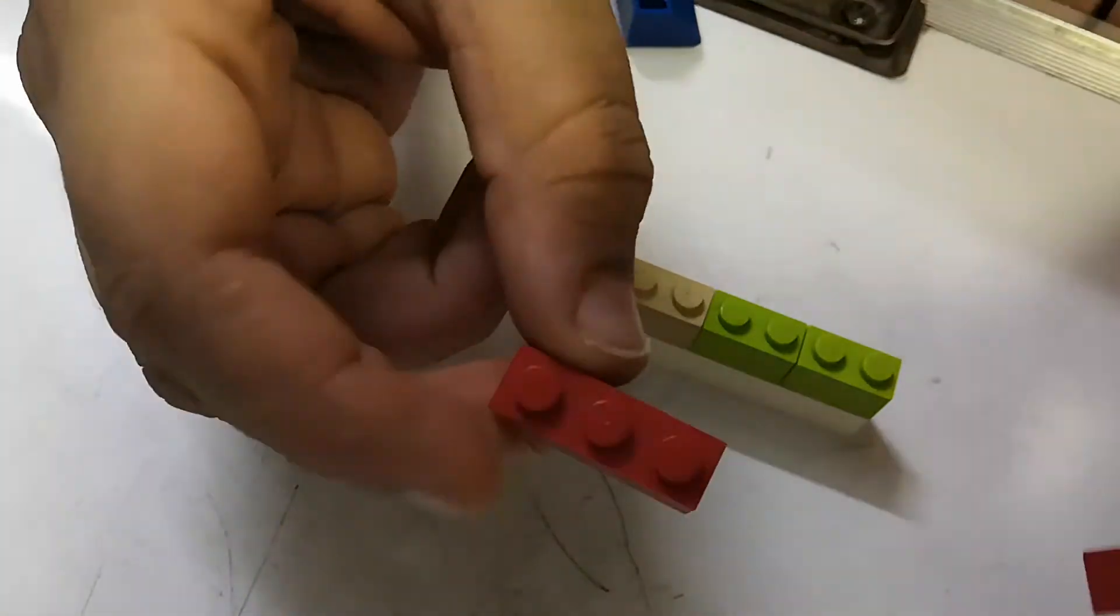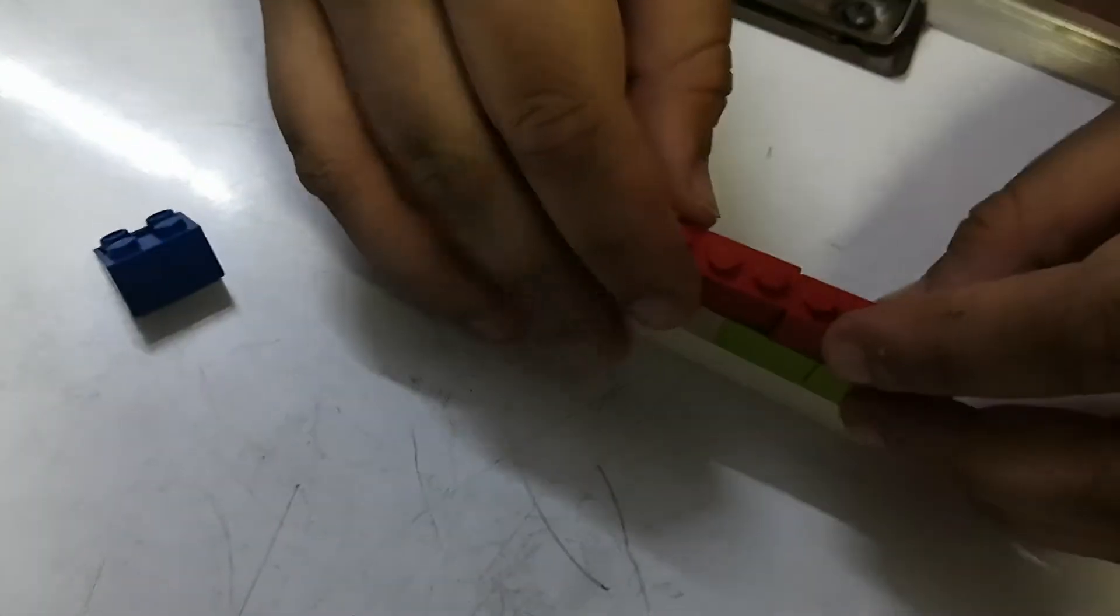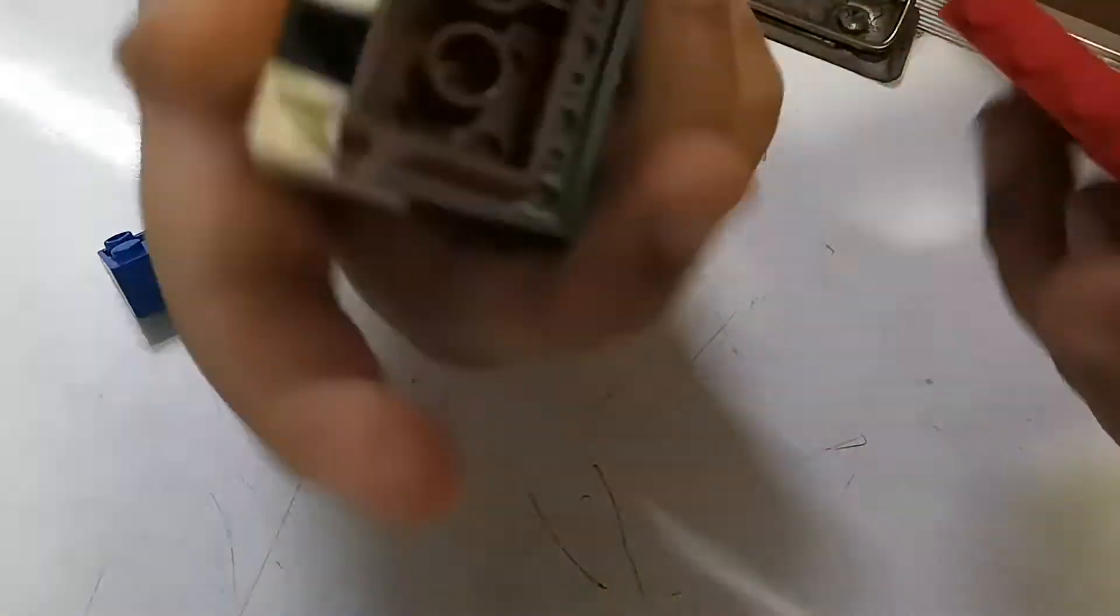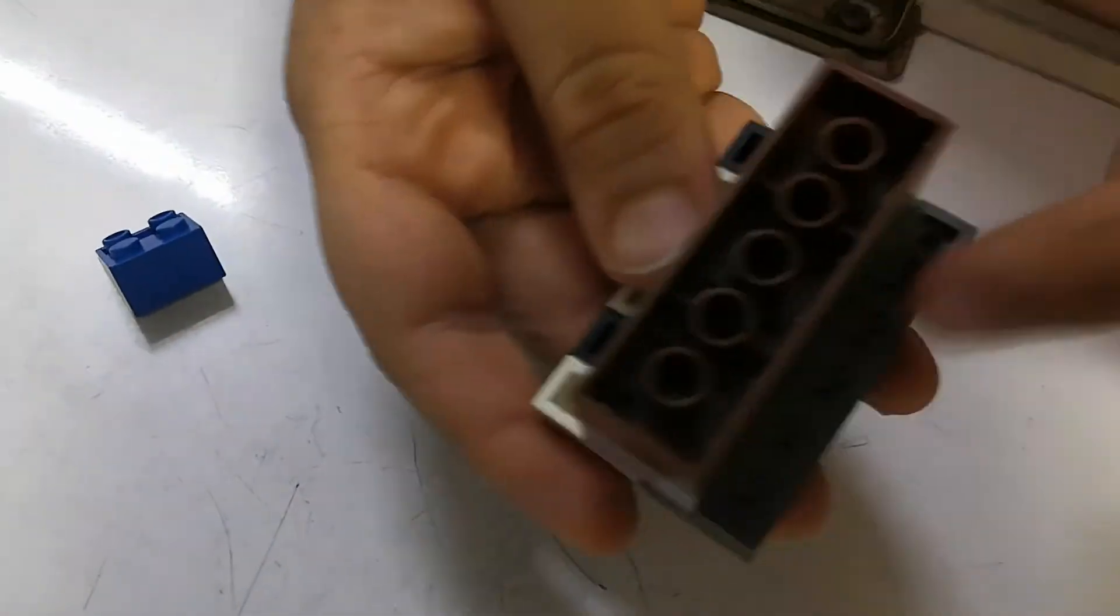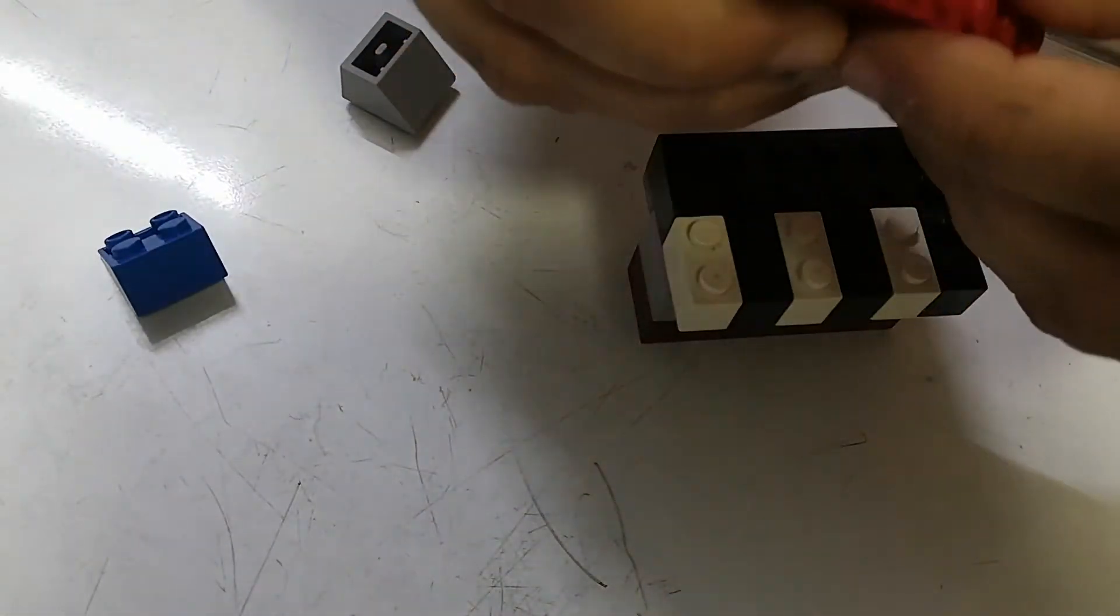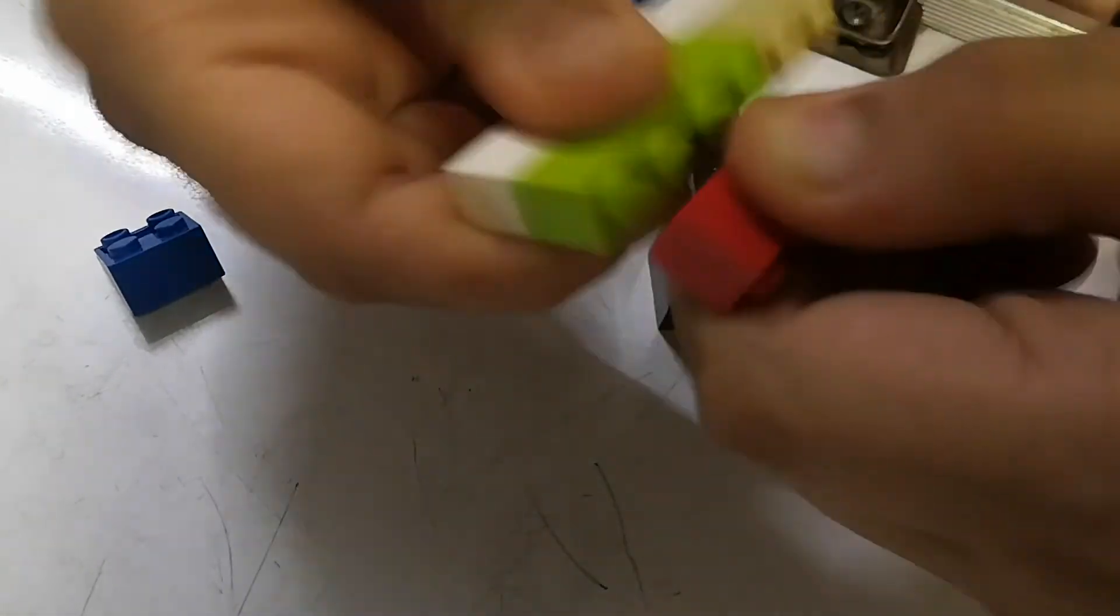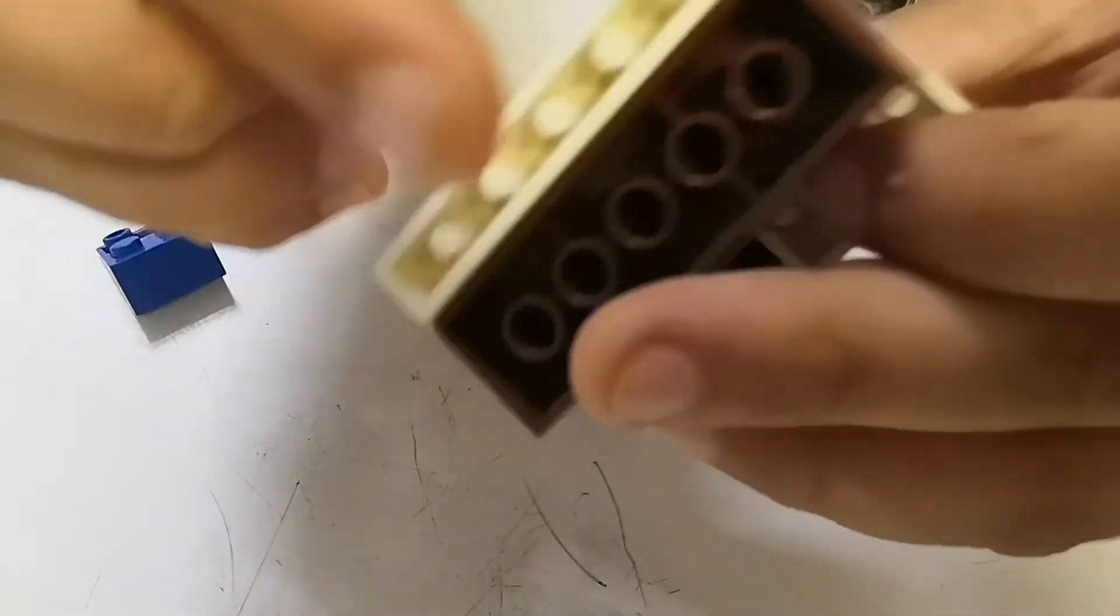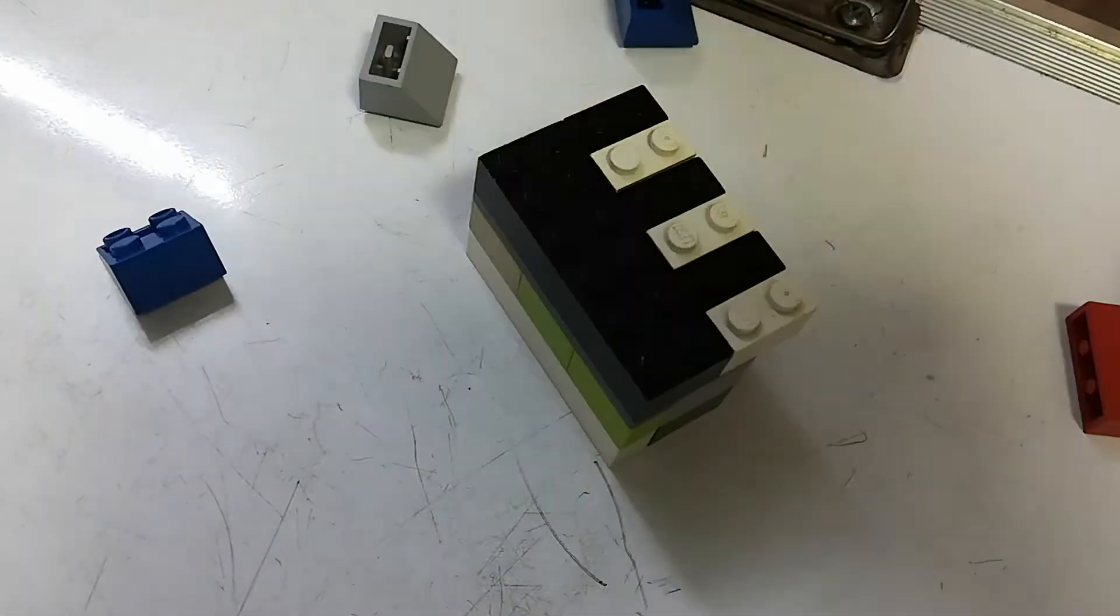We have these two red pieces, we'll attach it here. So now we'll just bring this piece again and we have this empty space, we'll put this here. But before putting this, we'll just make sure one thing - these two are on one level.